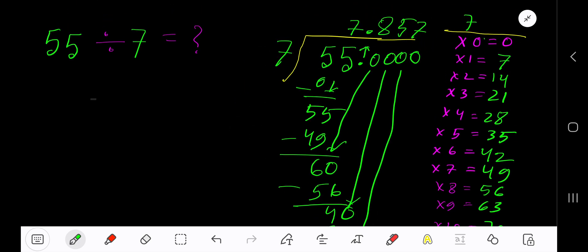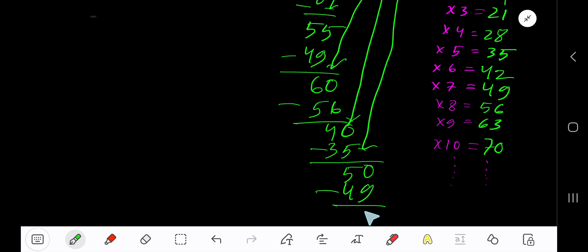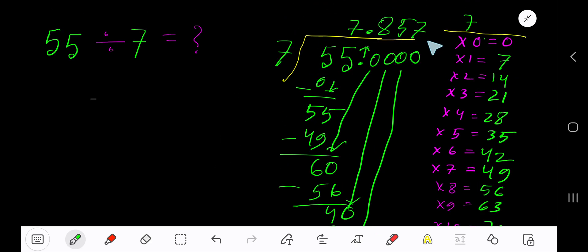You get 1. You can bring down more zeros, but since we have three places after the decimal, just place three dots. So our answer is 7.857 dot dot dot.